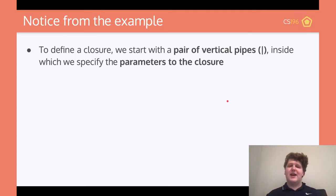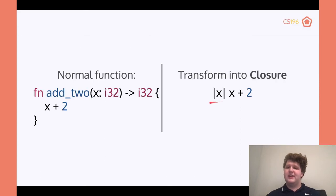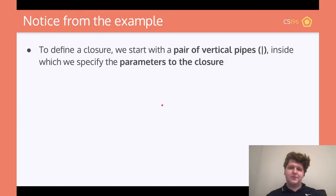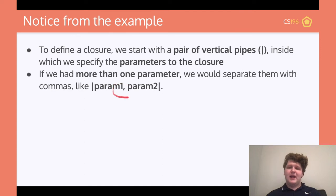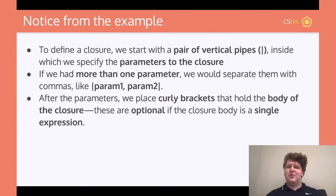Notice that when we're doing this, we use the vertical lines to specify the parameters. So if we wanted to add two numbers, we'd have x and y — we could put those inside these bars just like we would with a function, except we don't have to define the type because it can be inferred. If we had more than one parameter, we just put a comma in between. After the parameters, we could place curly brackets if it's multiple lines, but it's optional if we only have a single expression.